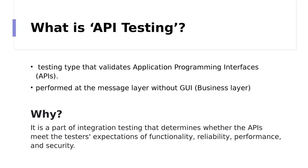So, what is API testing? It's actually a software testing type that validates API. The main purpose of API testing is to check the functionality, security of the programming interface you're working with, and reliability, and so on. This testing type is absolutely different from what you've previously worked with, because in API testing, instead of using standard user inputs like a keyboard and getting visual outputs, you will use special tools to call the API, get output, and note down the system's response.